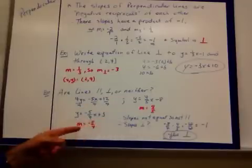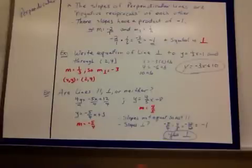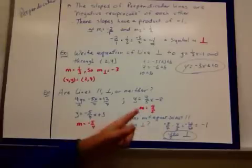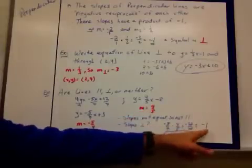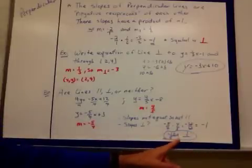Are they negative reciprocals? Can I multiply them together and get negative 1? Yep. If the slopes are equal, they're parallel. If the slopes are not equal, you can multiply them and see if you get negative 1. Check to see if they're negative reciprocals. If they are, they're perpendicular.